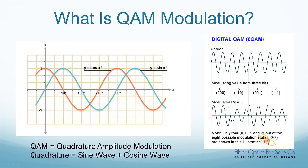QAM stands for Quadrature Amplitude Modulation. QAM is both an analog and a digital modulation method. But here, we are only talking about QAM as a digital modulation.